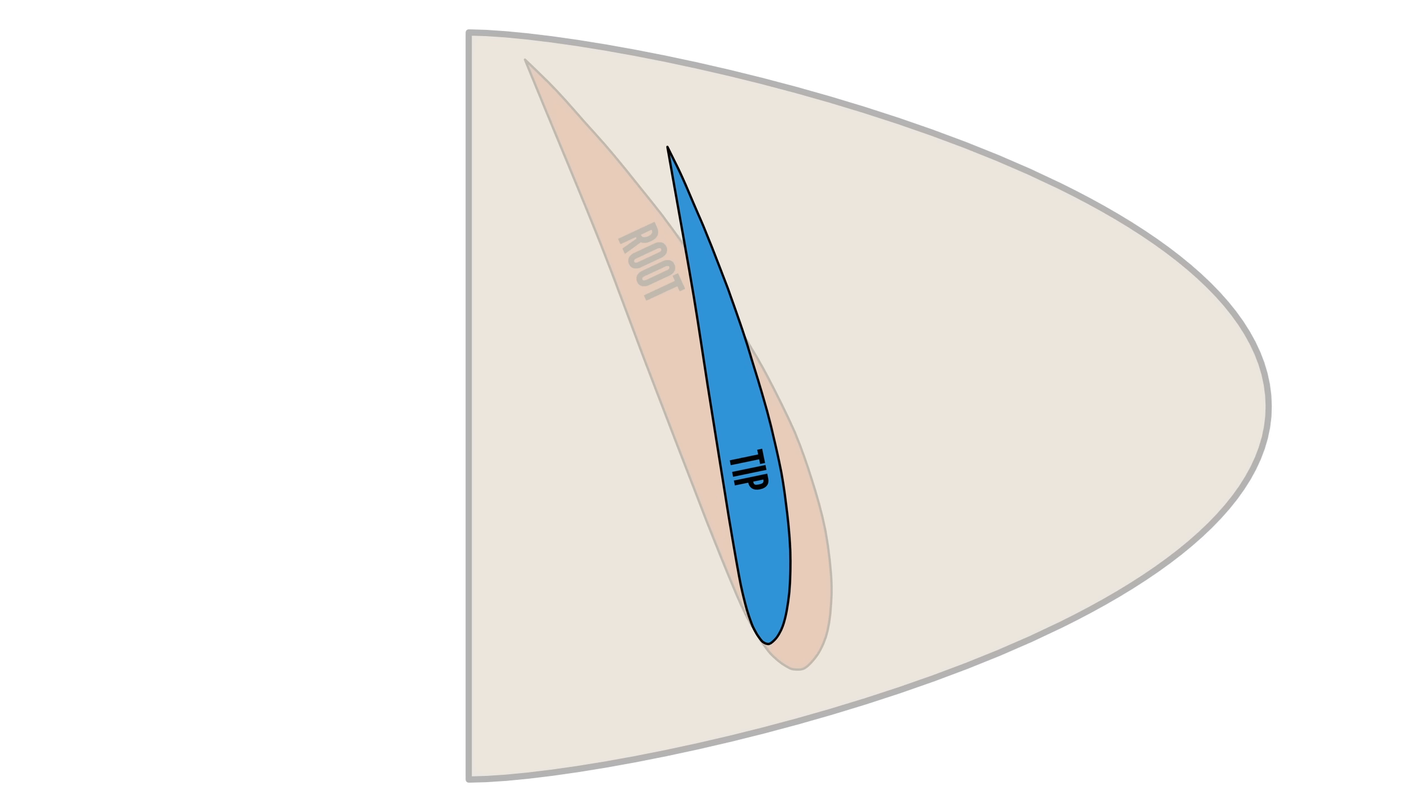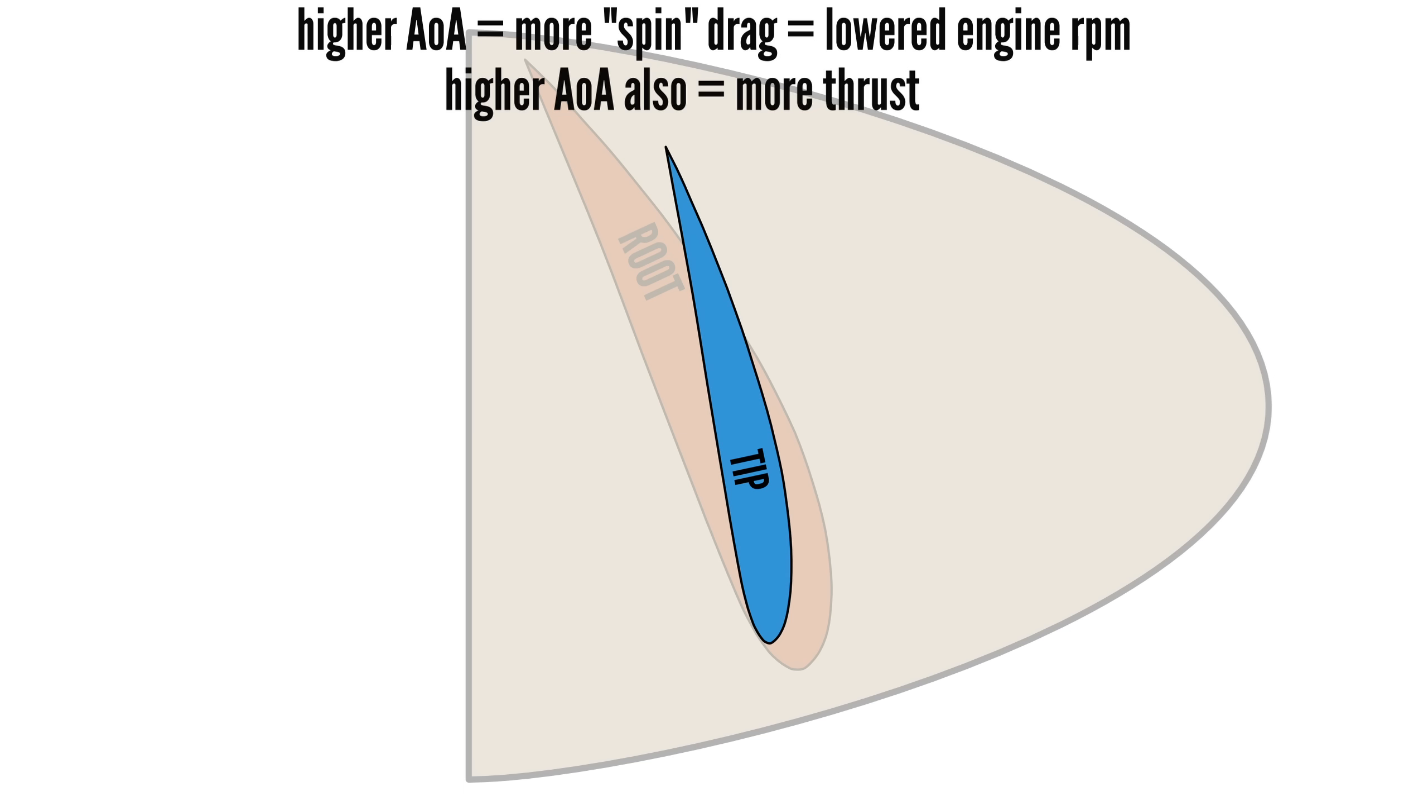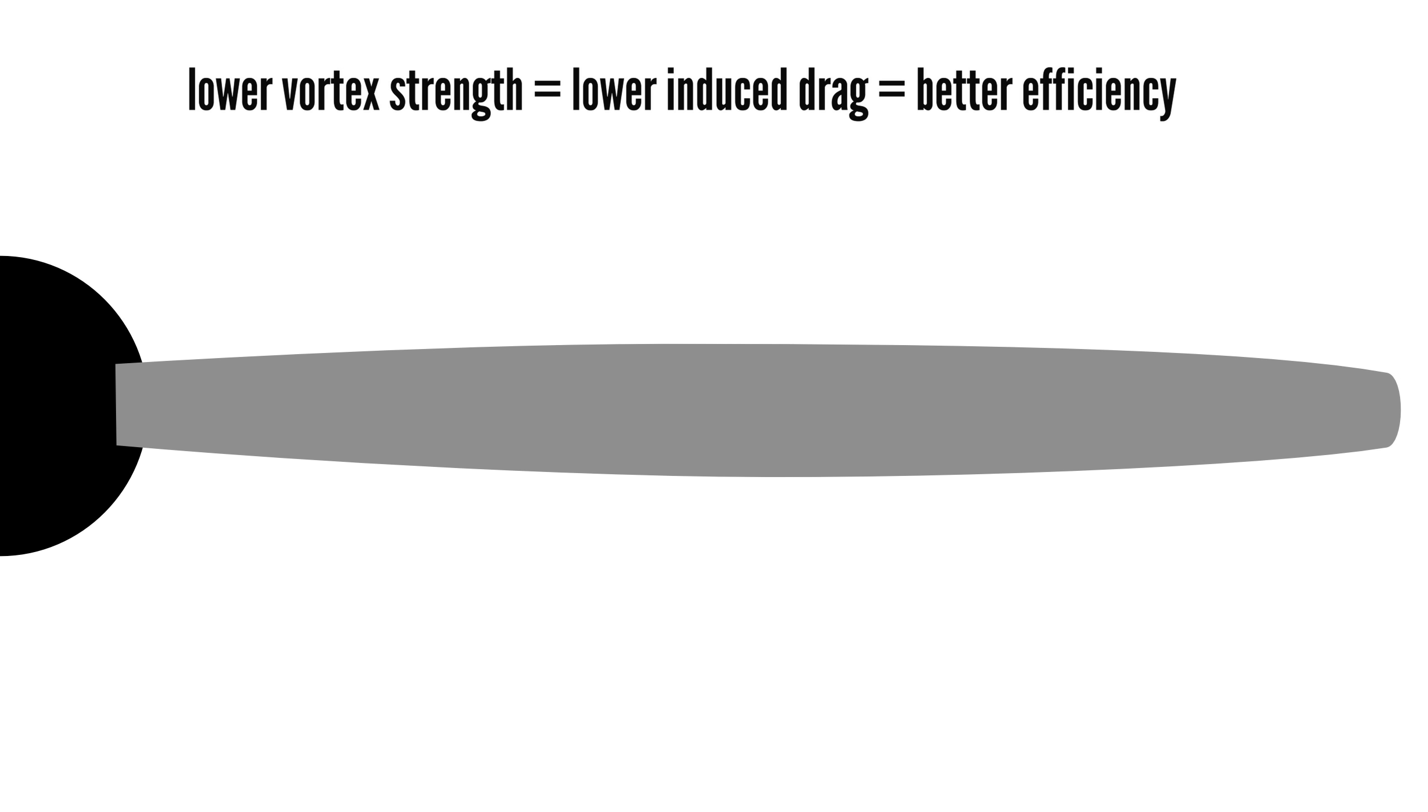Blade tips are crucial for high-speed thrust as they are the fastest moving part of the blade. On the E-PROPS, the higher angle of attack at the blade tips generates more load, helping to keep RPM lower while increasing thrust. And by reducing taper, tip vortices are minimized, improving high-speed efficiency by reducing drag. This contributes to the extended speed range by increasing thrust at higher airspeeds while keeping engine RPM lower.